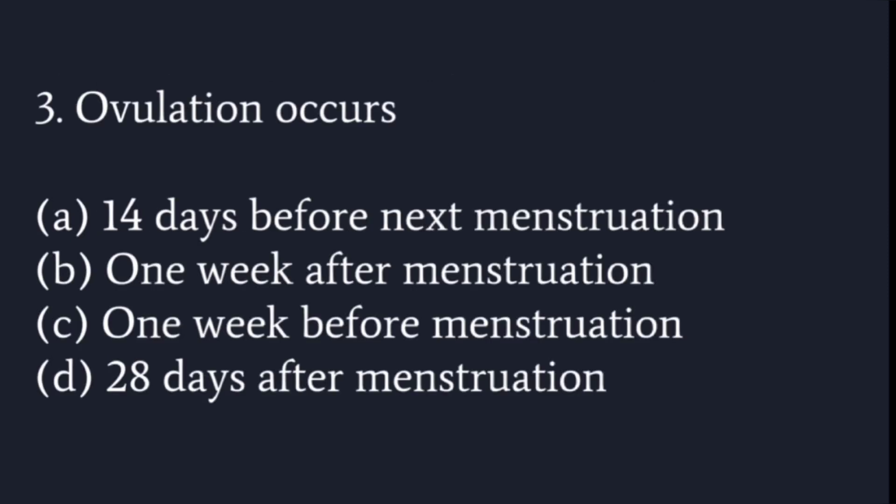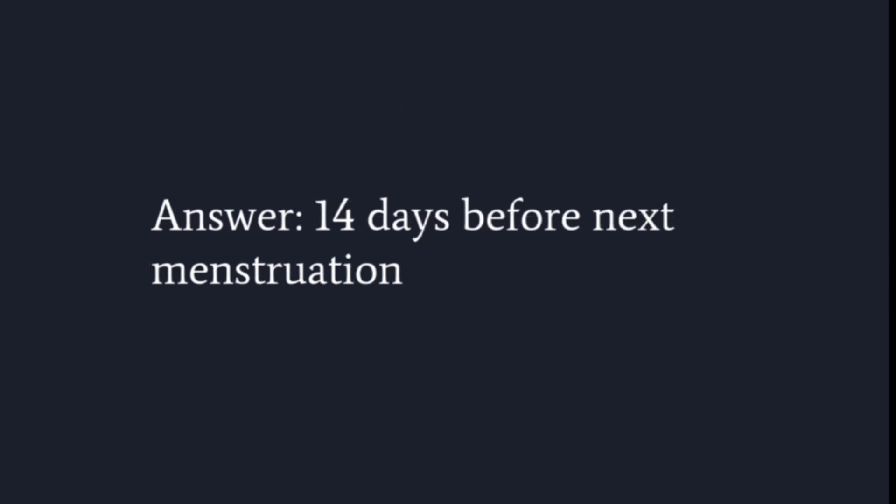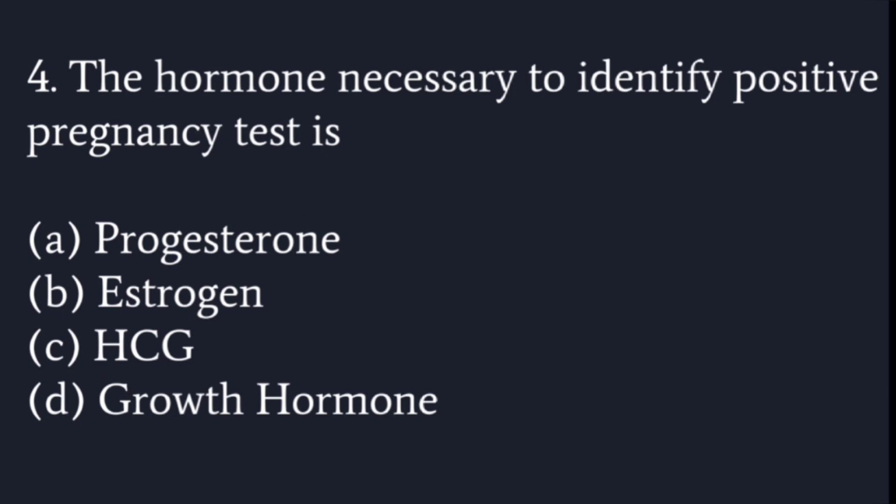Next question: ovulation occurs — 14 days before the next menstruation, one week after menstruation, one week before menstruation, or 28 days after menstruation? Ovulation always occurs 14 days prior to the next menstruation — 14 days before the next period is due.